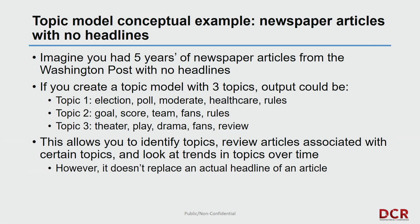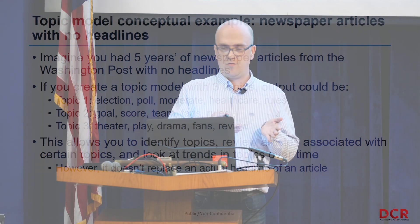Here's a contemporary example. Imagine you had five years of Washington Post articles with no headlines and you create a topic model with three topics. The output could be: Topic 1 — election, poll, moderate, healthcare, rules; Topic 2 — goal, score, team, fans, rules; Topic 3 — theater, play, drama. This allows you to identify topics, review articles associated with specific topics, and look at trends over time. However, it doesn't actually replace the headline of an article, so there's a manual review component in addition to the actual modeling process.